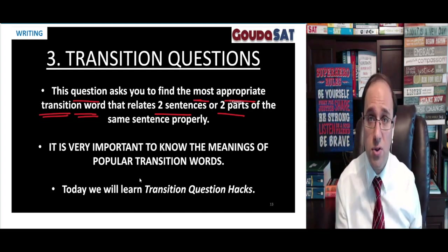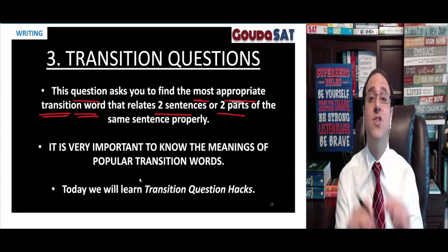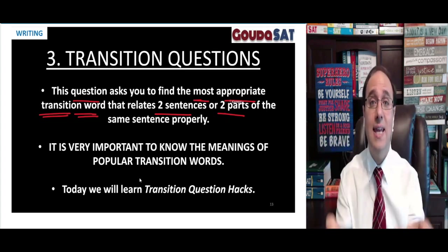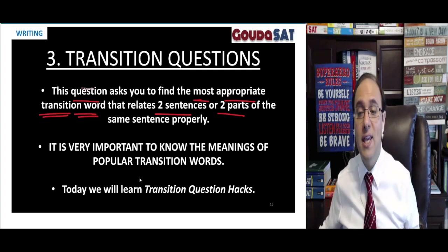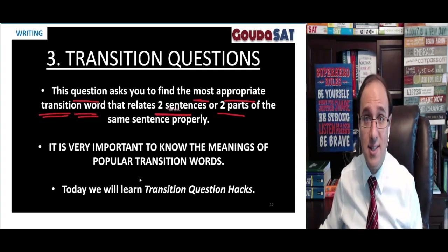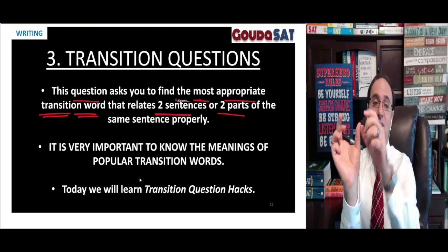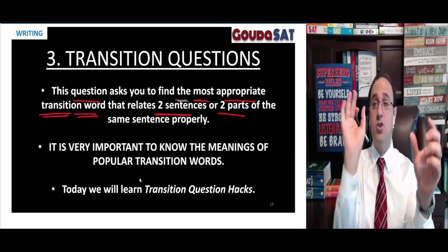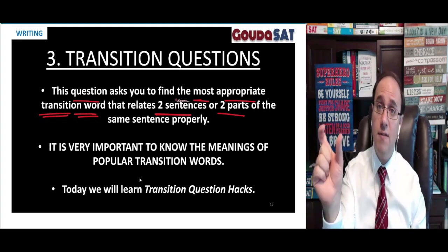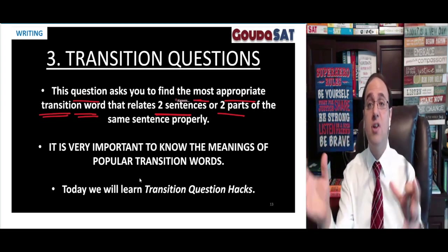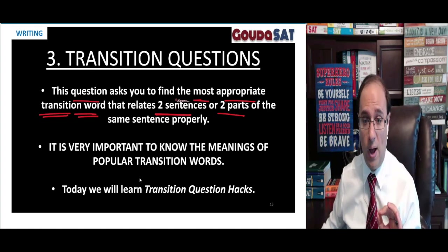You will be given four transition words and you need to choose the best one — the one that is the most appropriate in the sentence. The transition word will either relate two sentences, so it will be at the beginning of a sentence relating the sentence before it to the sentence after it, or it could be in the middle of a sentence and relate two parts of the same sentence. We're going to take a look at an example in a little while.